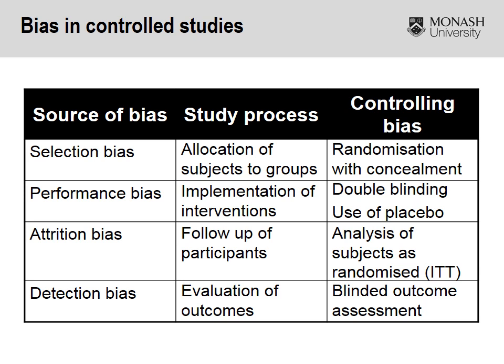The last bias we're concerned with is detection bias, which relates to the person or persons — researchers, whoever they may be — evaluating the outcomes. When we say we're blinding at this stage, we're not blinding them to the outcome being measured, but blinding them so that as they're measuring the outcome, they don't know whether the participant is in the intervention or control group. We don't want outcome assessors to be able to manipulate data based on knowing which group participants were allocated to.